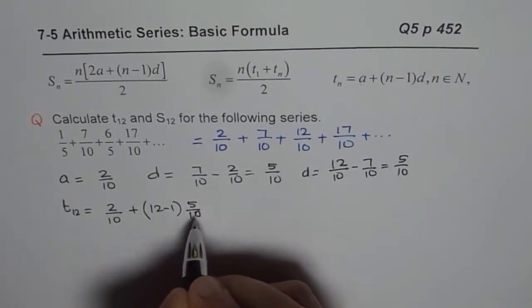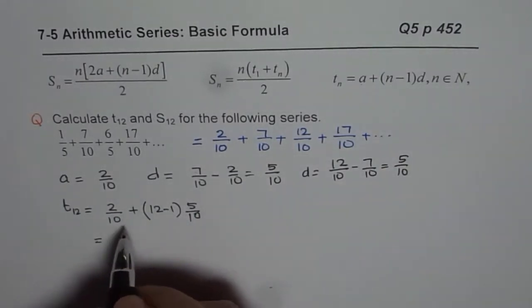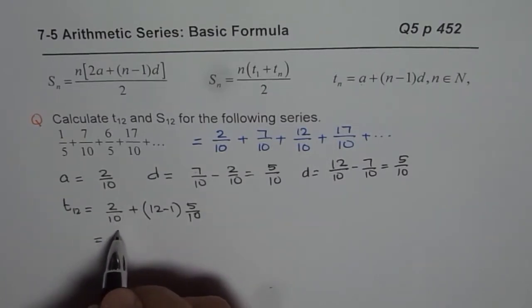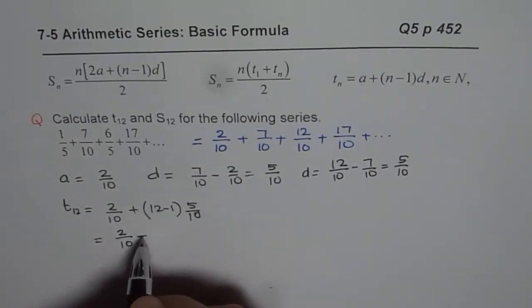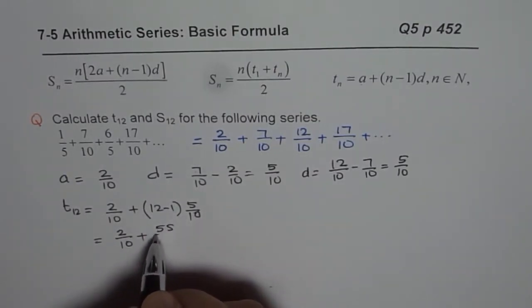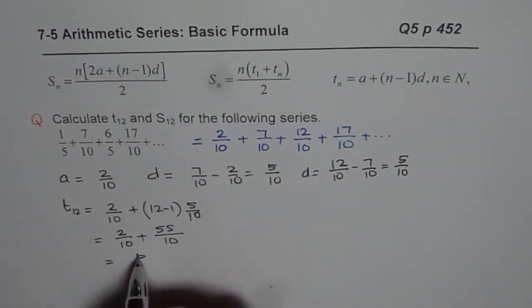So what we get here is the 12th term with base 10. So it is easy to add and subtract. So we get 2 over 10 plus 12 minus 1 is 11. 11 times 5 is 55. So that could be written as 57 over 10.